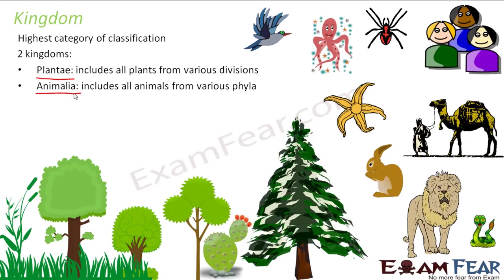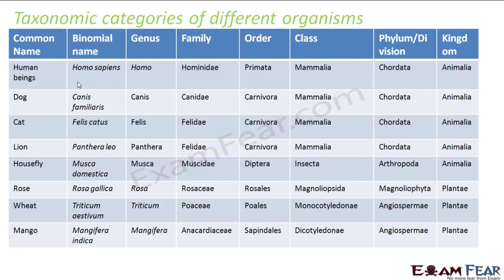After our discussion on the taxonomic categories, we conclude that as we go higher in the taxonomic hierarchy, the similarities between the organisms keep decreasing. Please make sure that you understand these taxonomic categories because they are very important. Let us look at the scientific classification of some common organisms. For example, human beings — binomial name is Homo sapiens, written in italics. The genus is Homo, family is Hominidae, order is Primata, class is Mammalia, phylum is Chordata, and kingdom is Animalia.